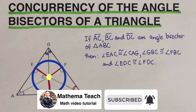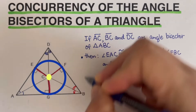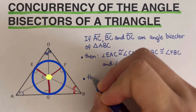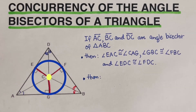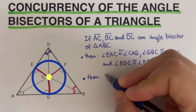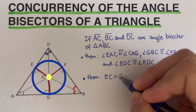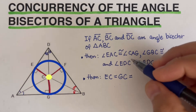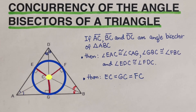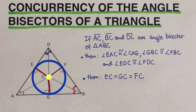Since all radii of a circle are equal, we can therefore say that EC is equal to GC, and that is also equal to FC. These three line segments are the radii of the incircle coming from the incenter, so they are all equal to each other.